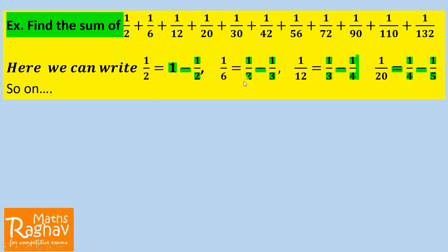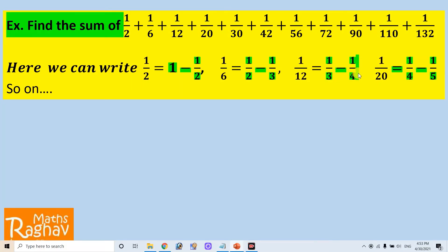So we can find a pattern: 1/2 is written as 1 minus 1/2, next term gives 1/2 minus 1/3, then 1/3 minus 1/4, then 1/4 minus 1/5. If we break further terms similarly, these intermediate terms will cancel out each other during summation, so we can apply this telescoping approach.